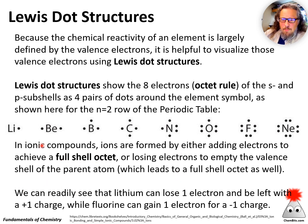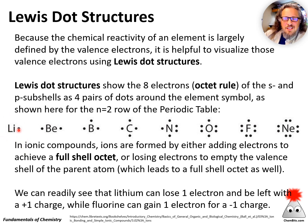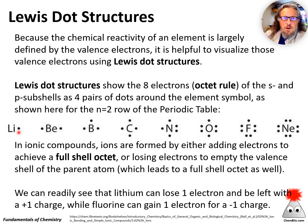So what happens when these interact? From Lewis dot pictures, if I've got something like lithium, and I want it to get to a stable full-shell configuration, I just need to lose this one electron. So lithium tends to lose one electron and become lithium plus one — it loses a negative charge and is left with a plus one charge.